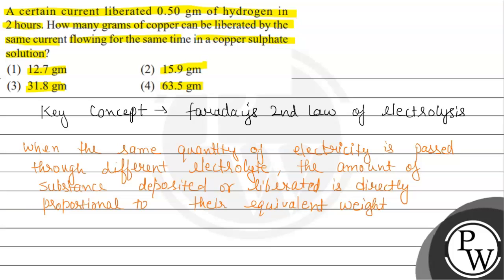The mathematical expression of the second law is: mass of A divided by mass of B will be equal to the equivalent weight of A divided by equivalent weight of B.